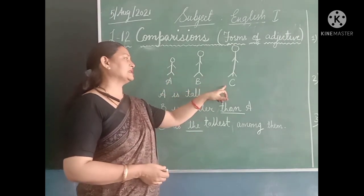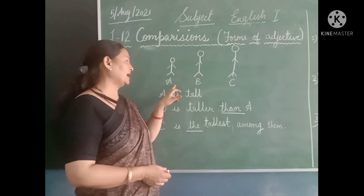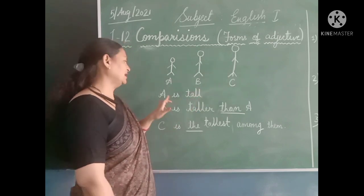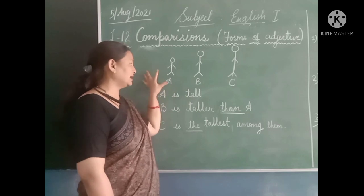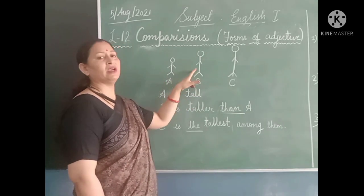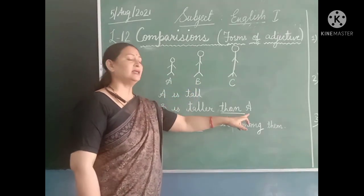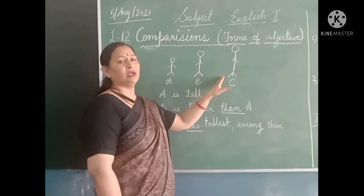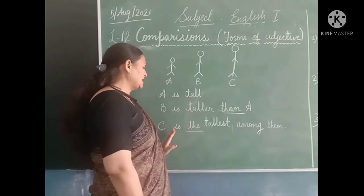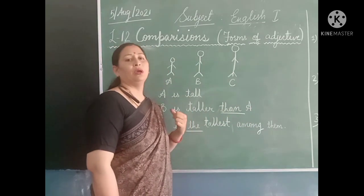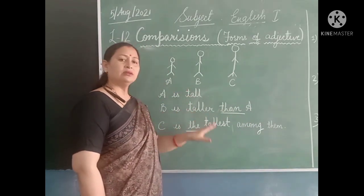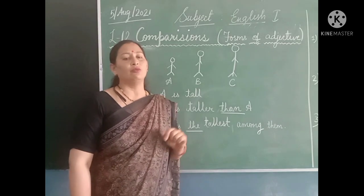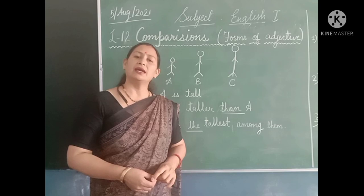Here I have drawn three pictures. Let us consider them A, B, and C. If I say A is tall, then comparing these two, B is taller than A. And among these three, which one is the tallest? C is the tallest among them. So tall, taller, tallest — these are the three forms of adjectives, and with the help of these adjectives we compare things and persons.